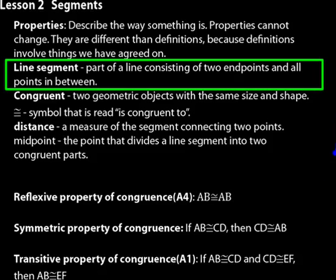And if we put some names on those endpoints, like A and B, we might write that as segment AB. And instead of a line with arrows above it, we would just put one straight line above it like that.